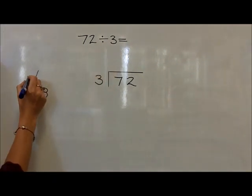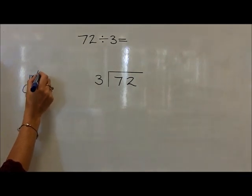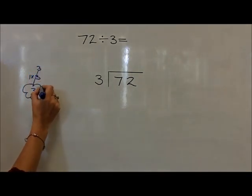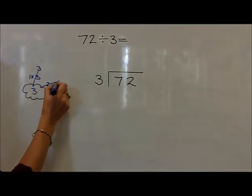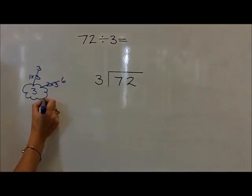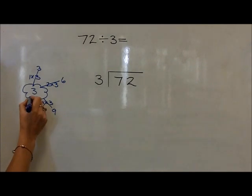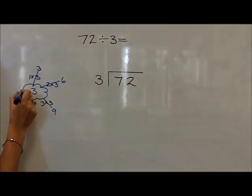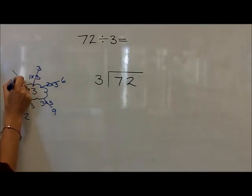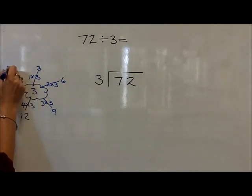We start off by writing down that we know that 1 group of 3 is 3, 2 groups of 3 are 6, 3 groups of 3 are 9, 4 groups of 3 are 12, 5 groups of 3 are 15, and then use that 10 groups of 3 are equal to 30.